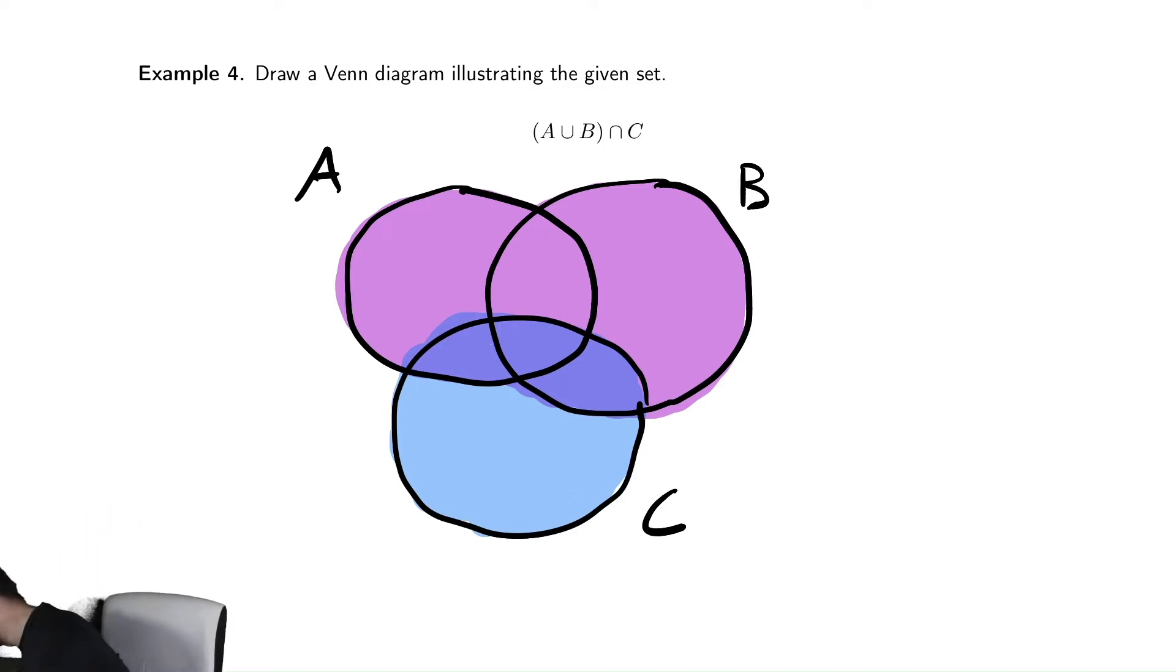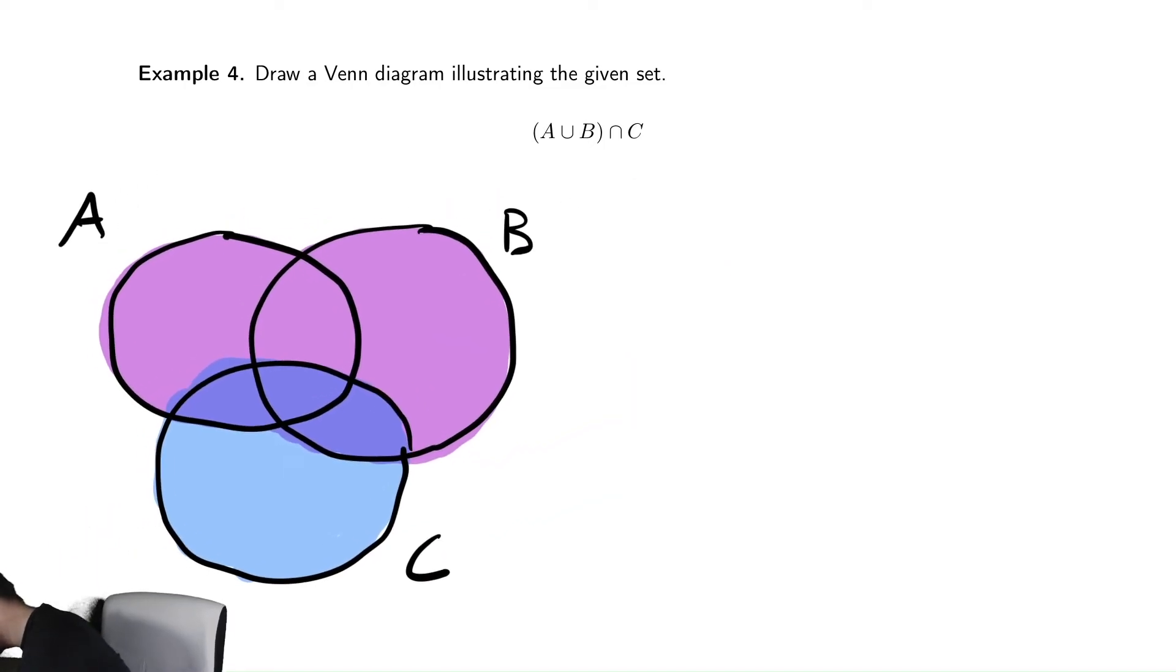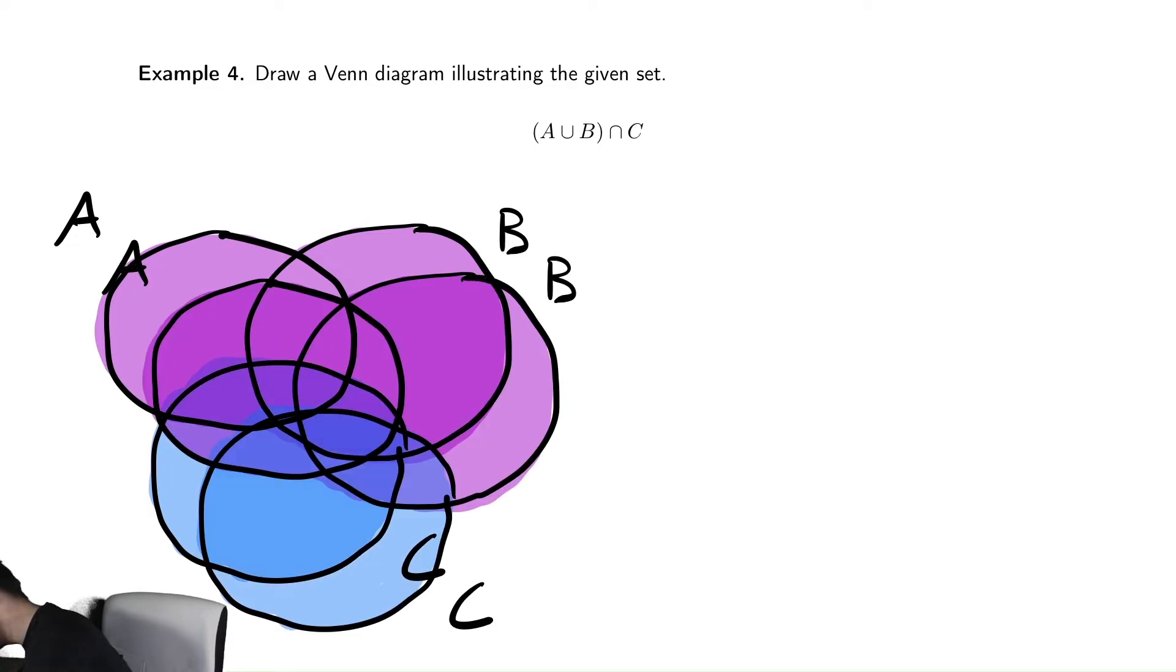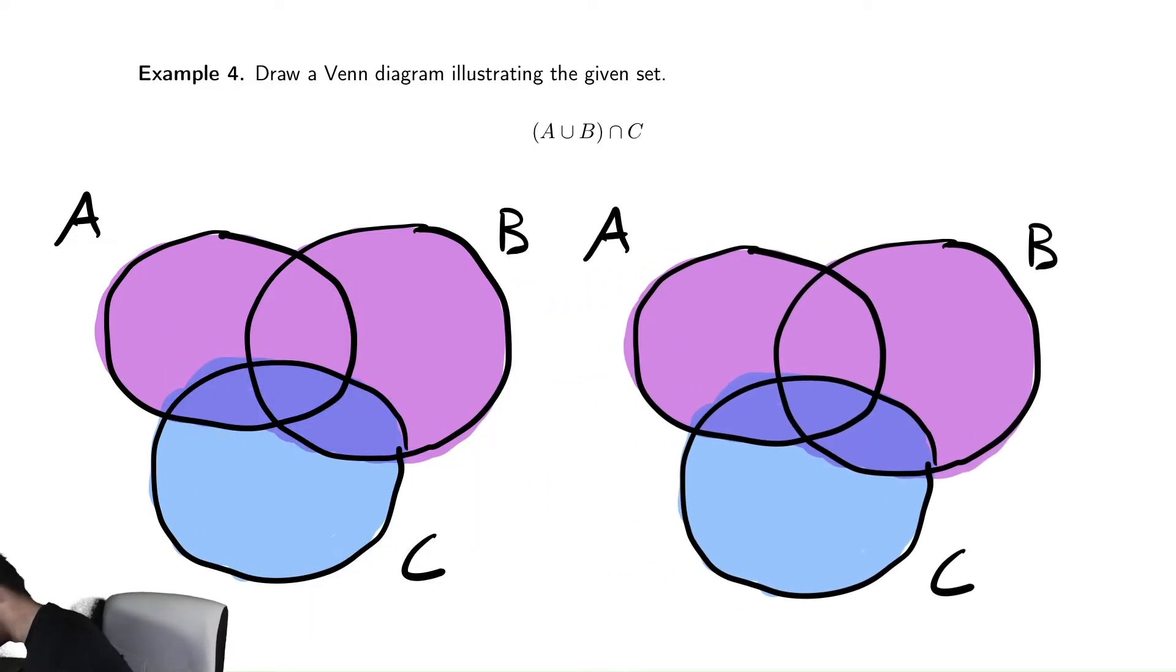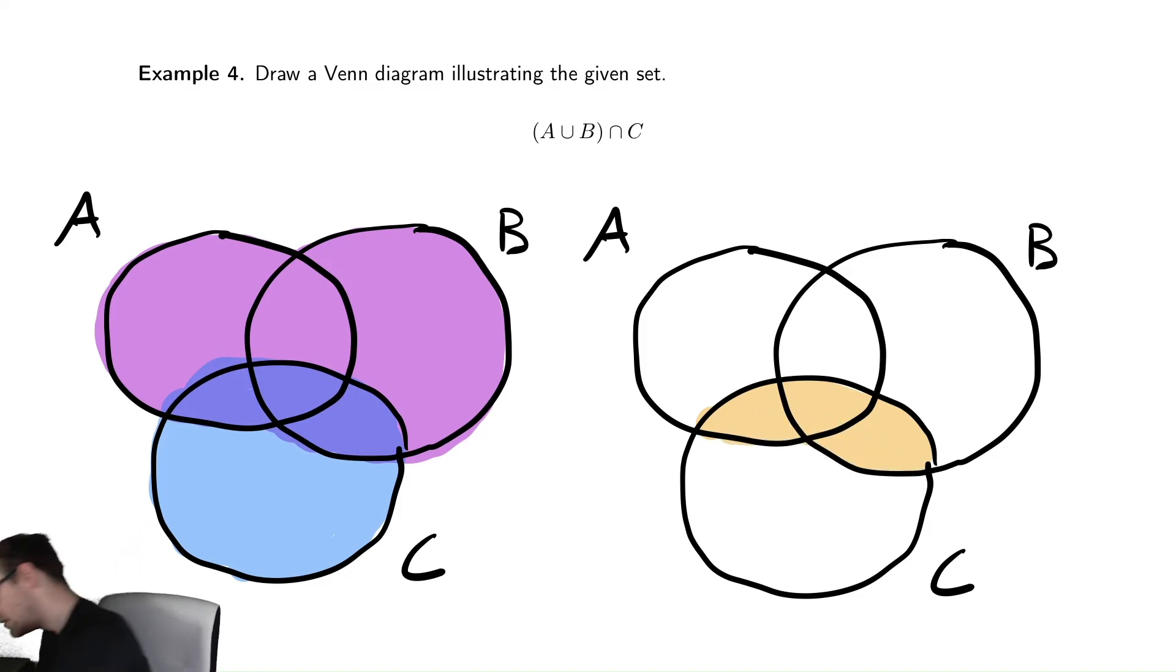So maybe off to the side I will draw the final answer, which I'll duplicate this, and then do some fancy erasing. So my final answer would be the set that's sandwiched between A, B, A or B, and then also in C. So my final answer is this thing here.